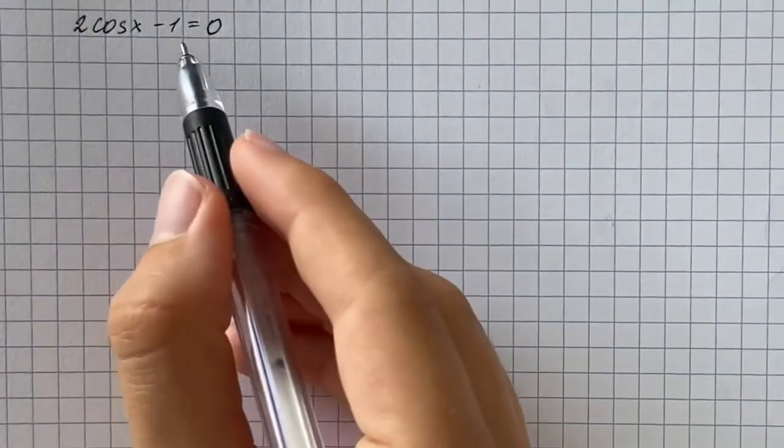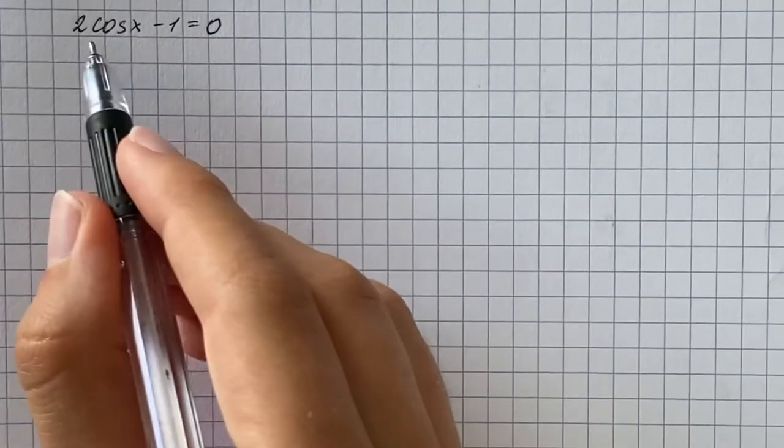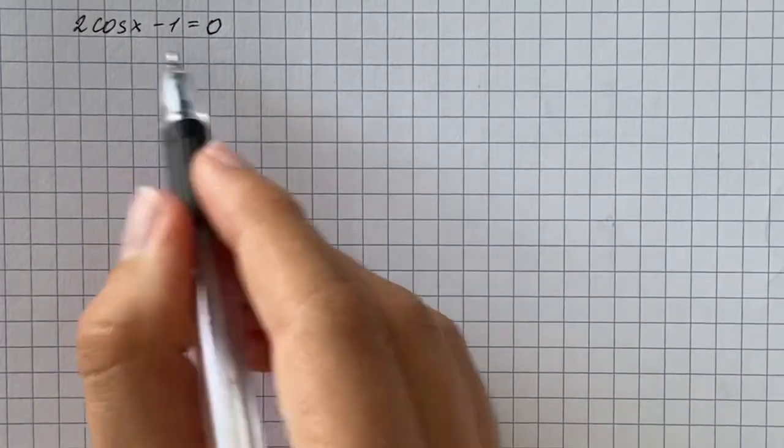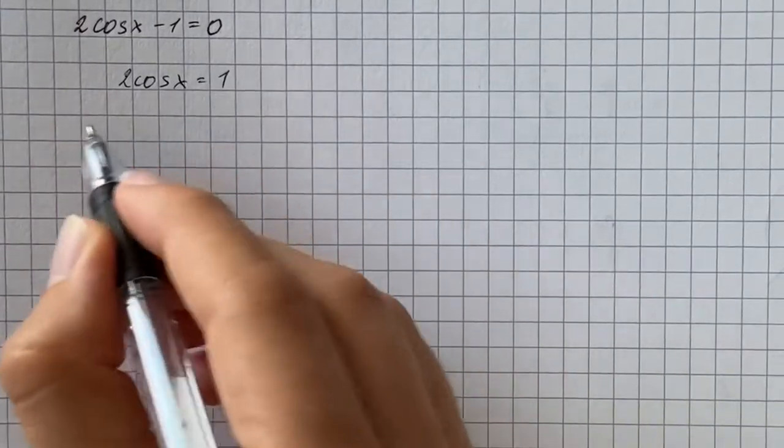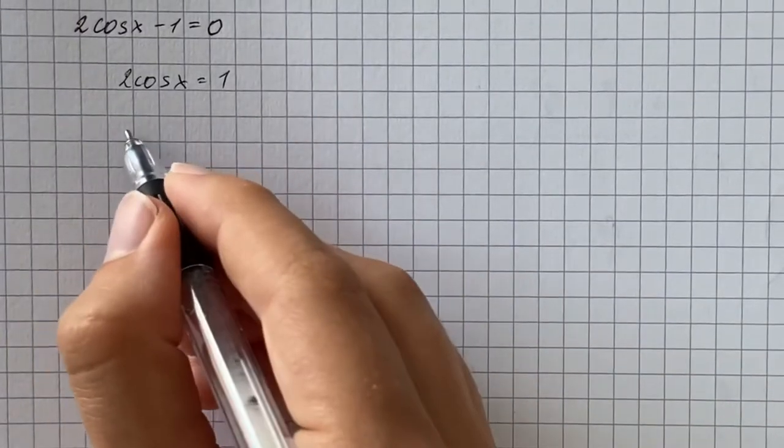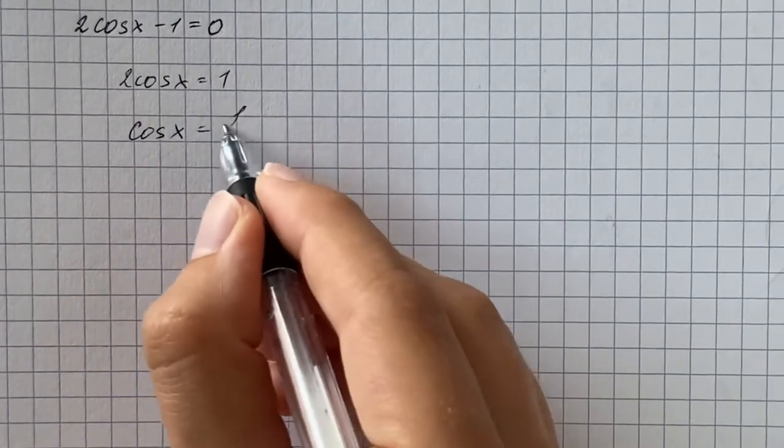We have to solve the given trigonometric equation, 2 cosine of x minus 1 equals 0. First we're going to add 1 to both sides, so that's going to be 2 cosine of x equals 1. Then we're going to divide both sides by 2, and we're going to determine where cosine of x equals positive 1 half.